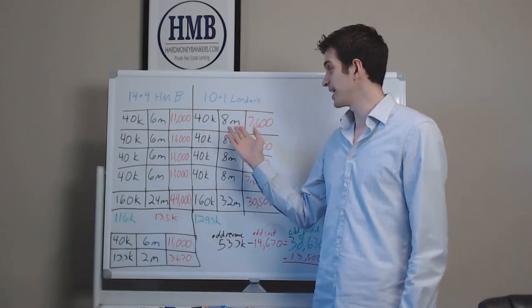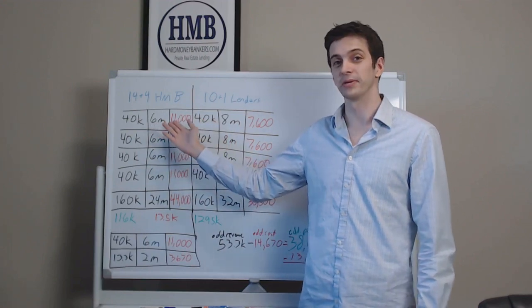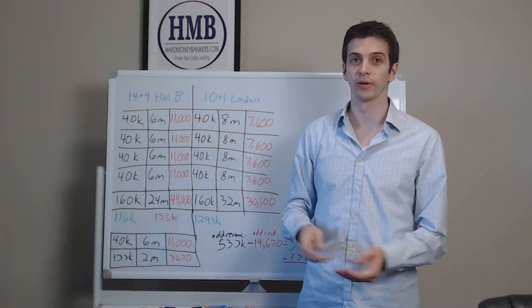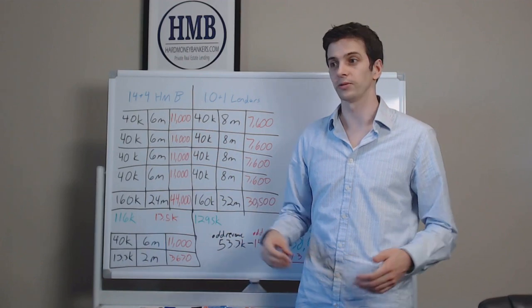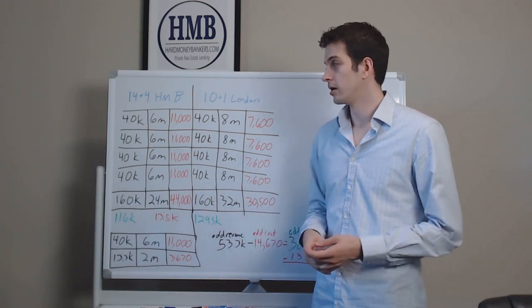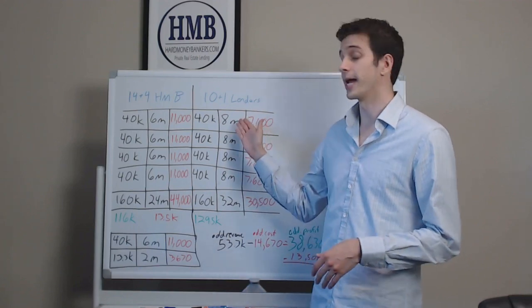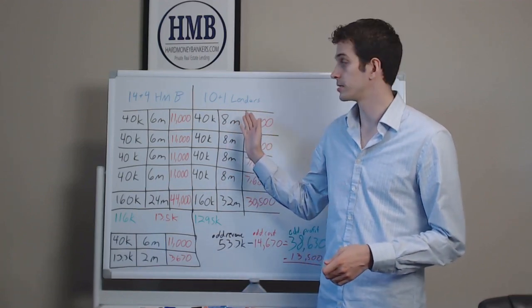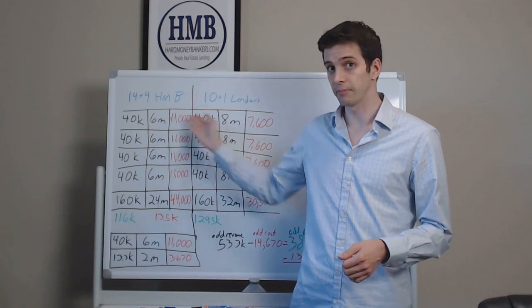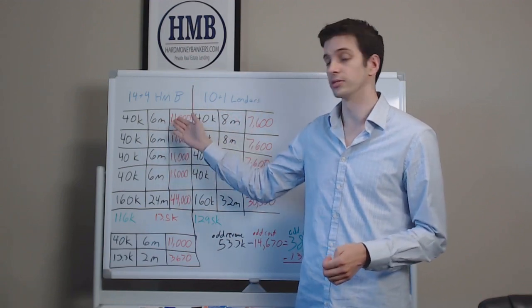So the reason why it's eight months and HMB is six months is because we get you out of that loan quicker. We get you started weeks in advance and we get your draws to you much quicker. Talked about that in the other video, so I won't go too much into it now, but know for about an eight month project with your other lenders, it's going to take six months, same project, same work, six months with HMB.